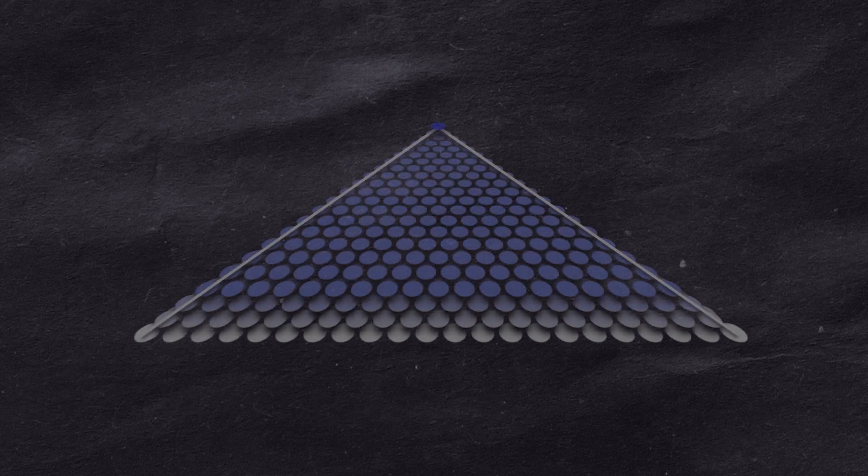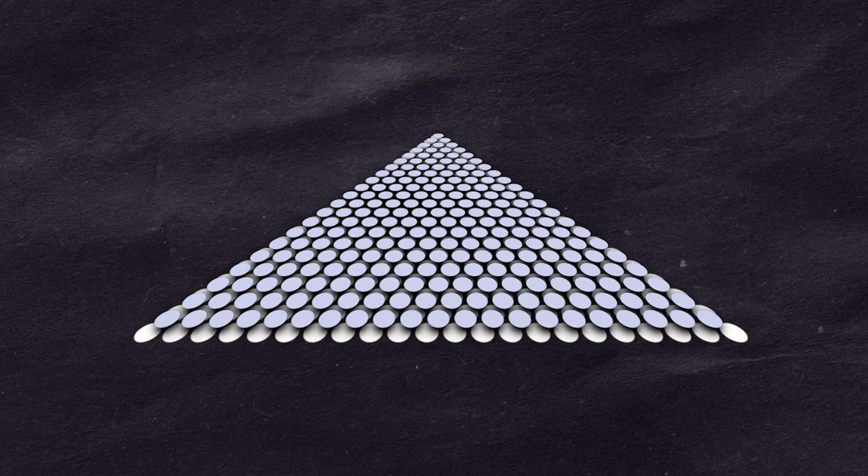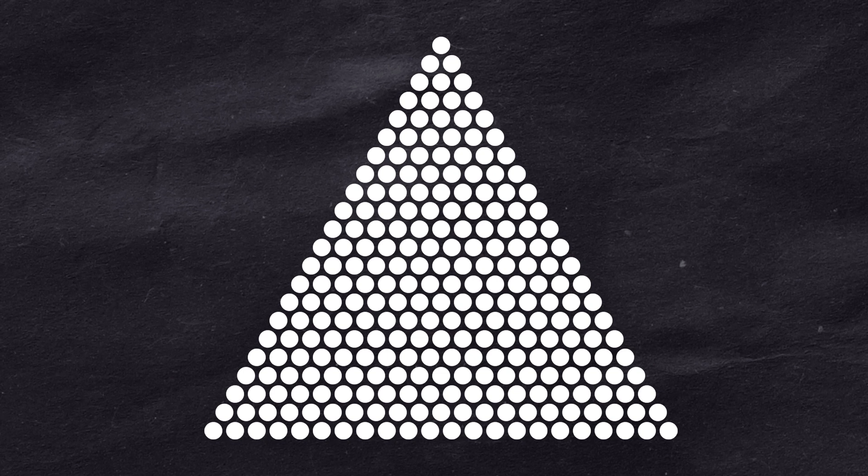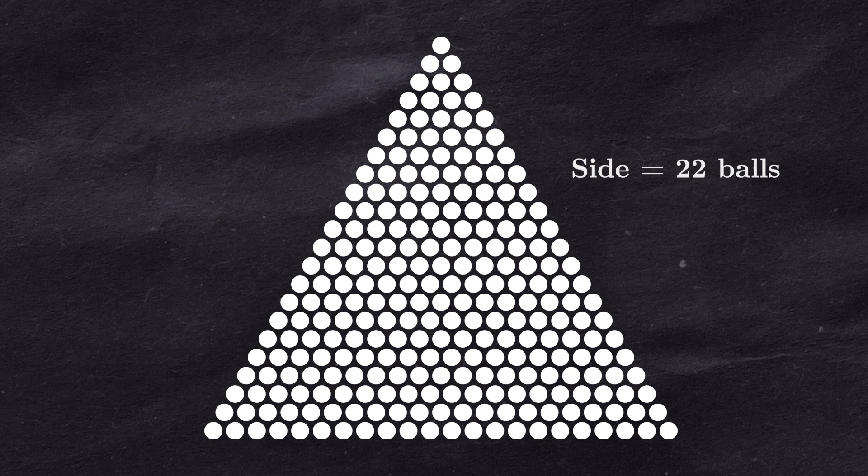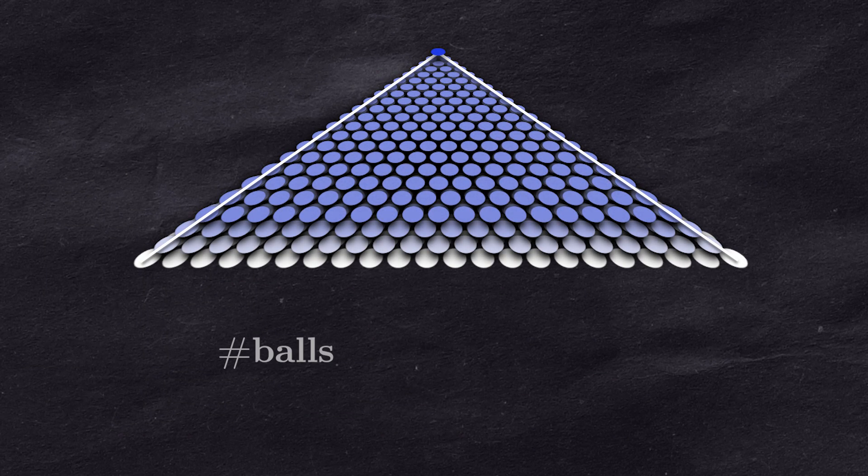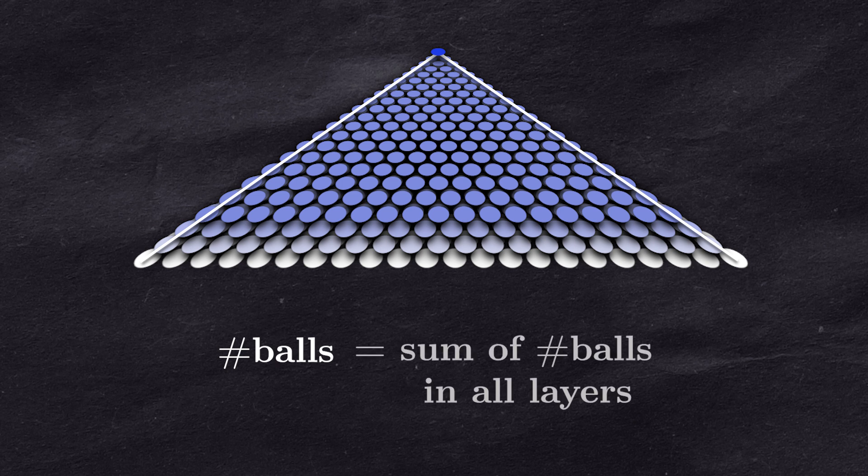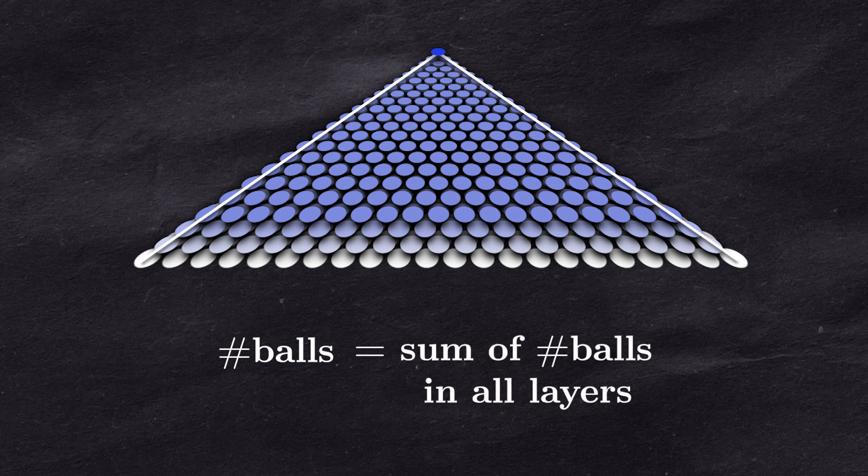Let us get back to the construction of the magical 2024 pyramid. We started with a triangle that was the base for the whole pyramid and its side consisted of 22 balls. Then we added another layer with a triangle with 21 balls on the side and so on. Therefore, the number of balls in the whole pyramid is equal to the sum of numbers of balls in all layers.